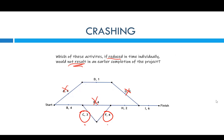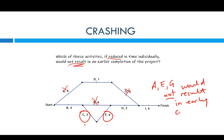To write an answer for this: A, E, and G would not result in early completion. Because they ask which of these, if reduced in time individually, would not result in earlier completion of the project — A, E, and G would not result in early completion of this project.